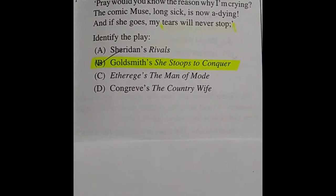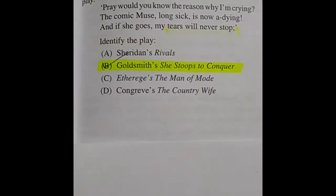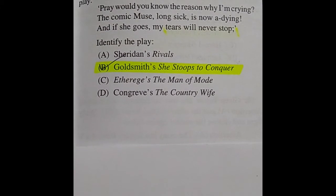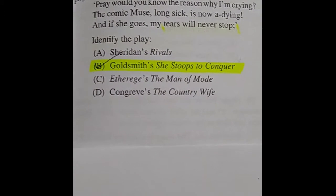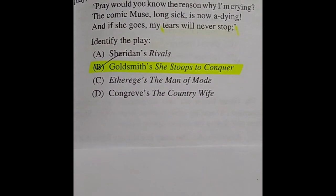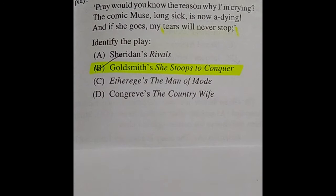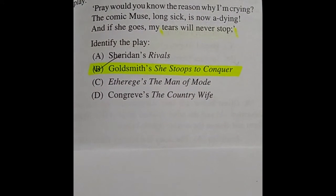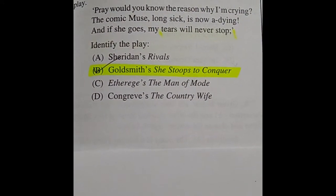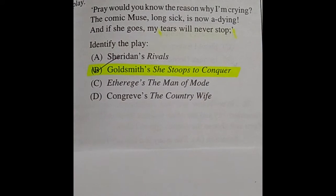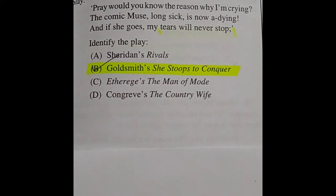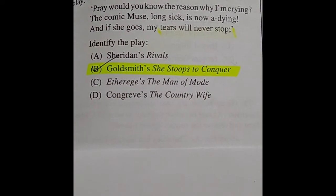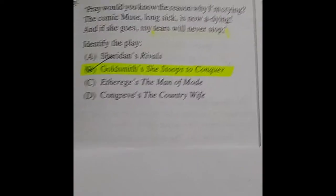Question 64: The following quotation is from the prologue of a play — 'Pray, would you know the reason why I'm crying? The Comic Muse, long sick, is now a-dying; and if she goes, my tears will never stop.' Identify the play. The right answer is option B: Goldsmith's She Stoops to Conquer.